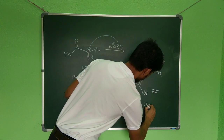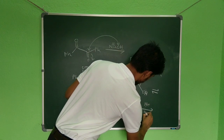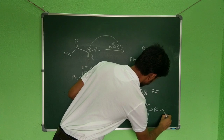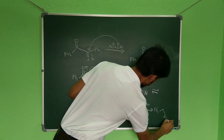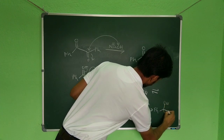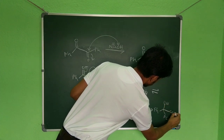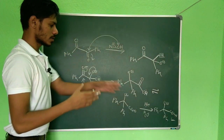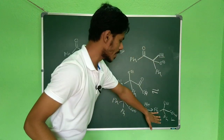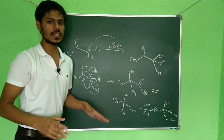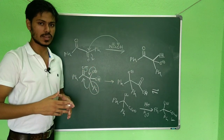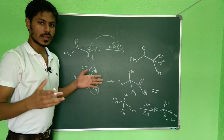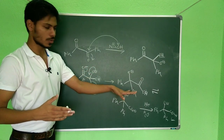Finally, after workup with H⁺/H₂O, you get Ph, Ph, OH, and COOH — this is the product, and it is called benzilic acid. So this is the Benzyl Benzylic Acid Rearrangement.